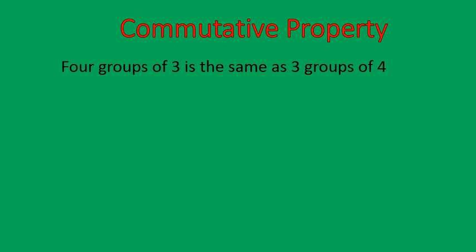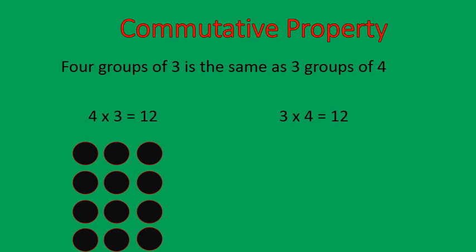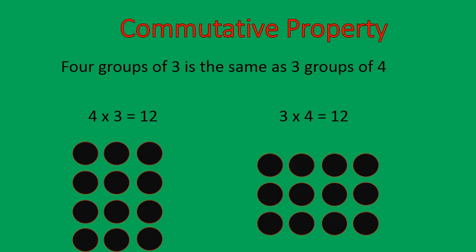The way that it works — moving or commuting numbers back and forth — would look like this: four groups of three is the same as three groups of four. So four times three is the same thing as three times four. Our commutative property just tells us what we already know: four times three is twelve, three times four is twelve. You can move numbers back and forth when you're multiplying. With the commutative property, you are moving things around — that is a key part of knowing if it's the commutative property.